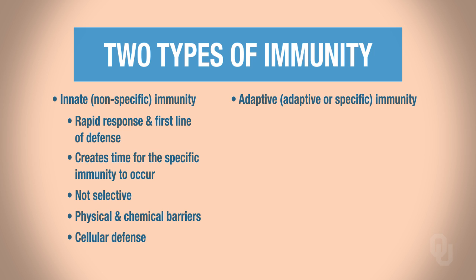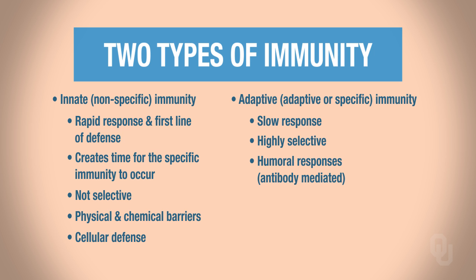Once innate immunity has occurred, acquired immunity kicks in. It's a slow response, and because it's slow, it's very selective in what it kills — it may target a specific bacterial cell or a specific virus. Specific immunity includes two types of responses: humoral responses, also called antibody-mediated responses, and cell-mediated responses, also called cytotoxic lymphocytes.